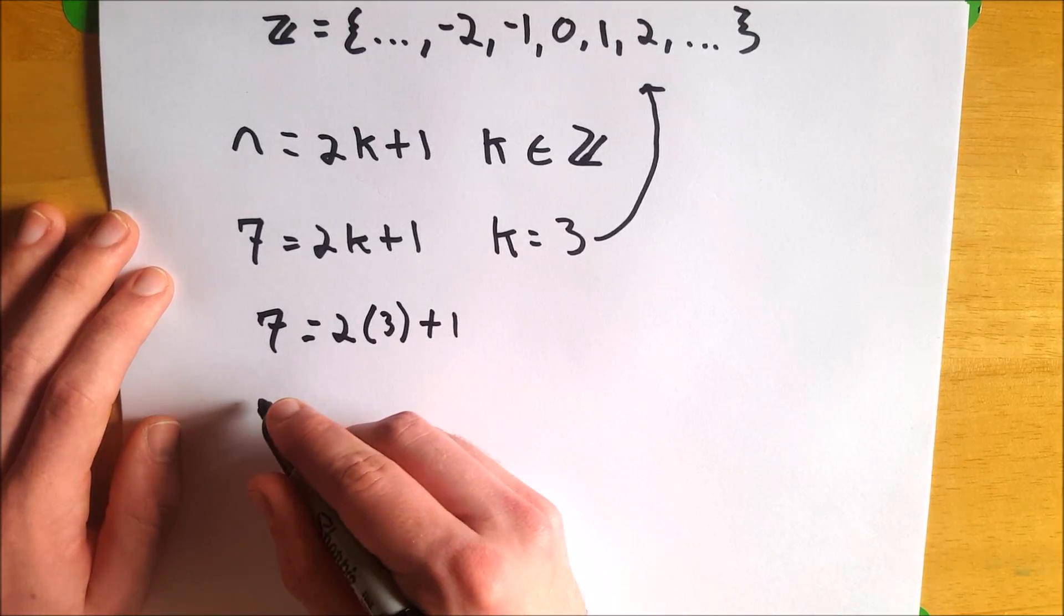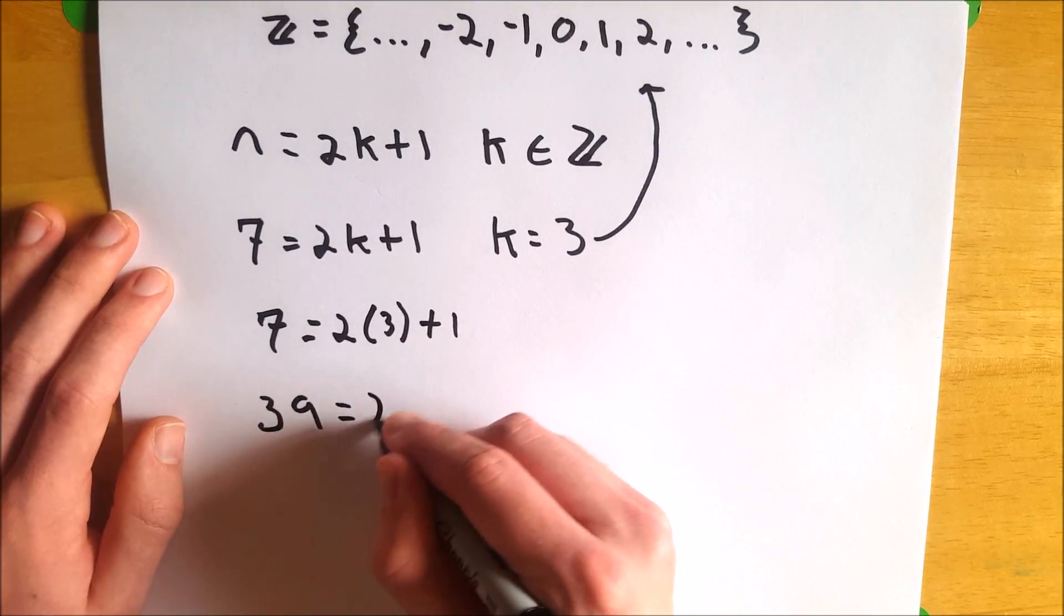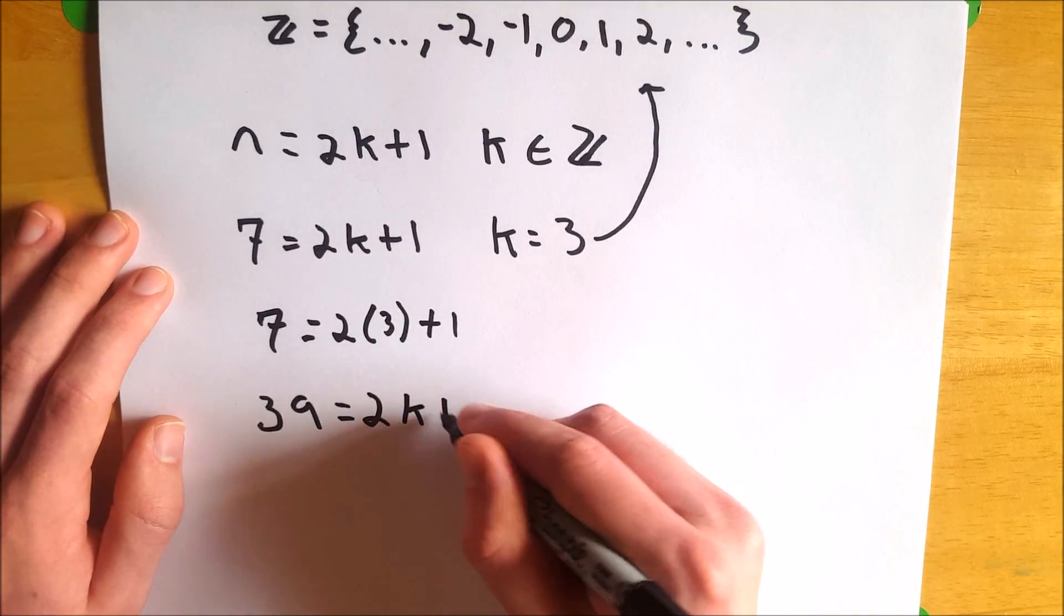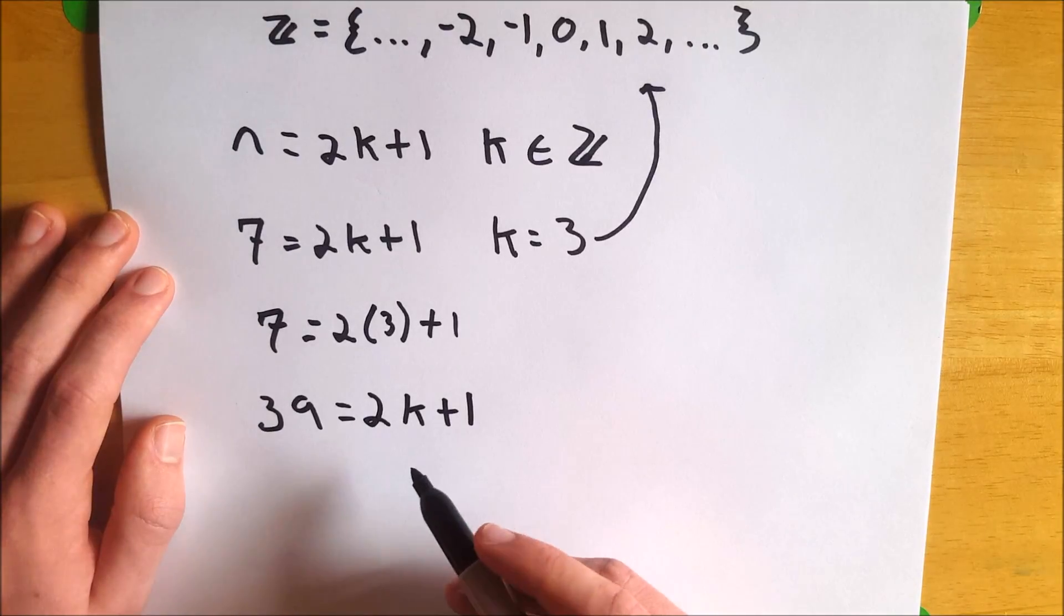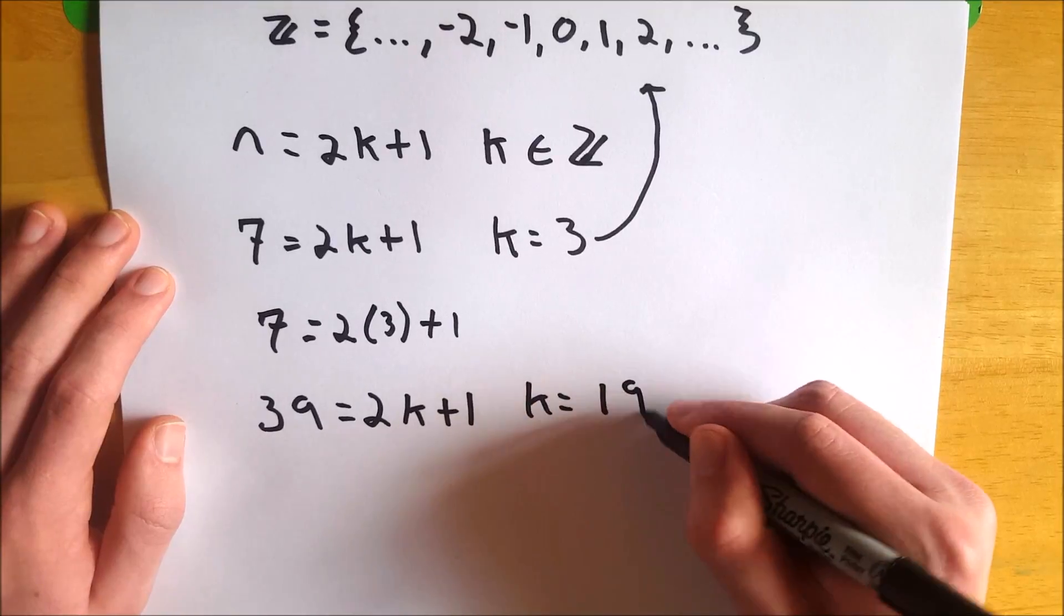Let's do 1 more. I'm sure you don't need to see too many of these. Let's check out 39. So 39 equals 2k plus 1 for what value of k? k equals 19.